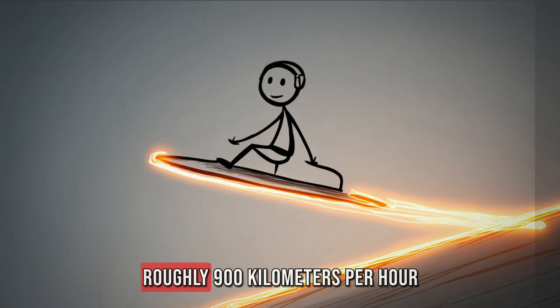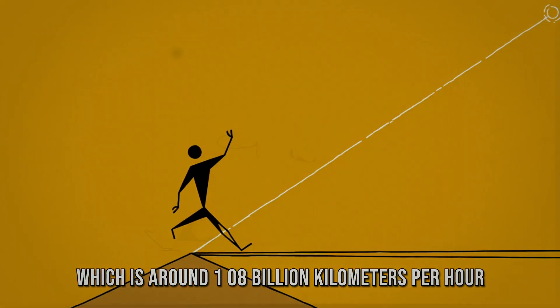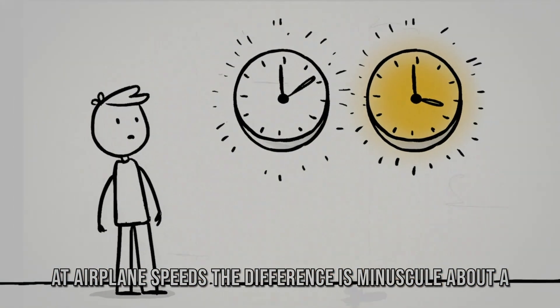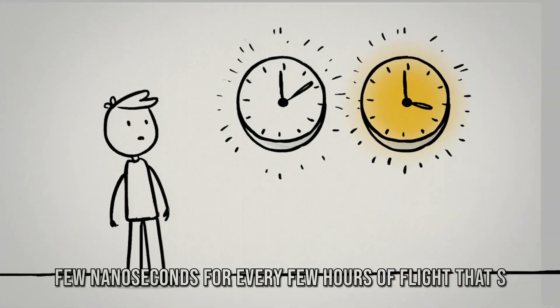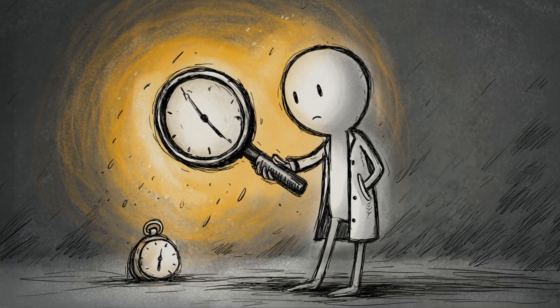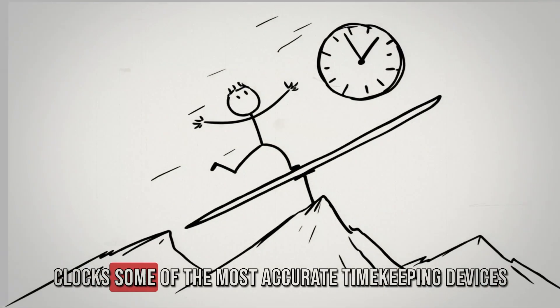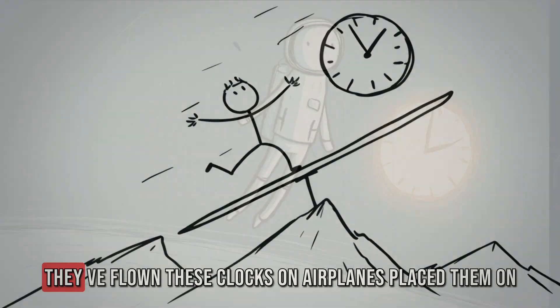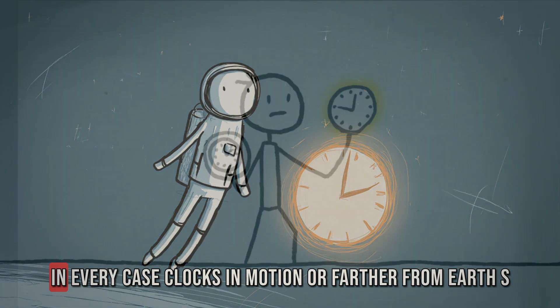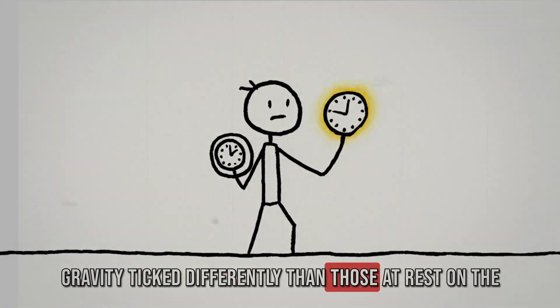A commercial jet flies at roughly 900 kilometers per hour. That's fast, but not even close to the speed of light, which is around 1.08 billion kilometers per hour. At airplane speeds, the difference is minuscule. About a few nanoseconds for every few hours of flight. That's billionths of a second. But our instruments are precise enough to measure it. And this isn't just theory. Scientists have tested it again and again with atomic clocks. Some of the most accurate timekeeping devices ever built. They've flown these clocks on airplanes, placed them on mountaintops, even sent them into orbit. In every case, clocks in motion or farther from Earth's gravity ticked differently than those at rest on the surface.